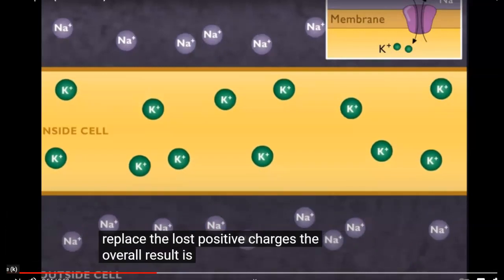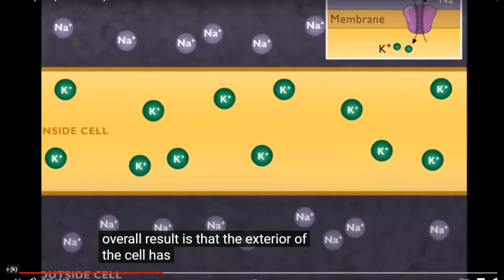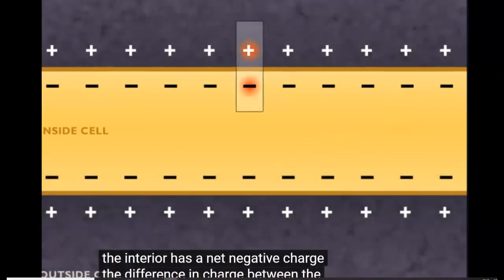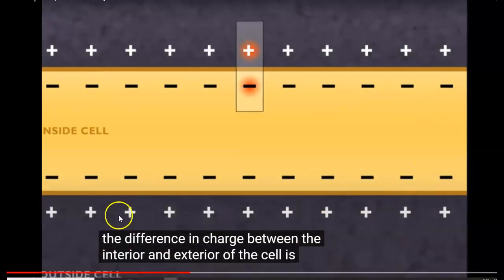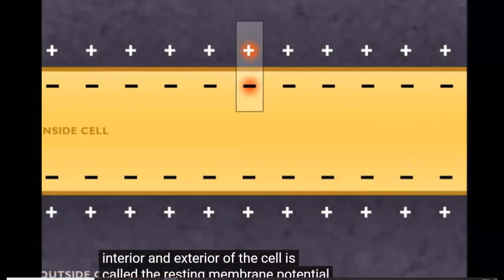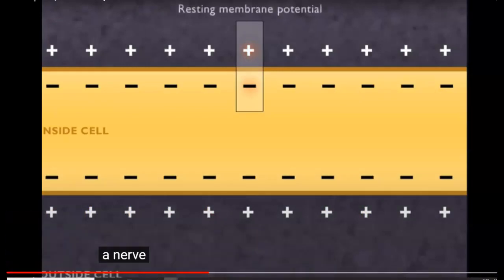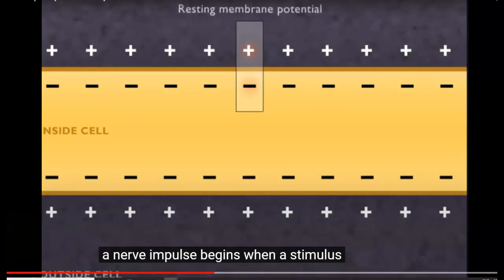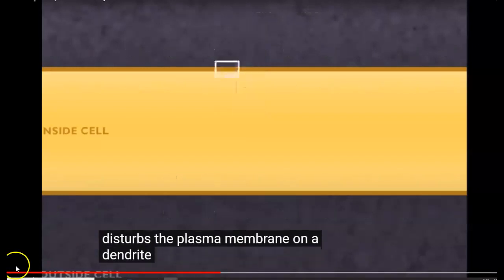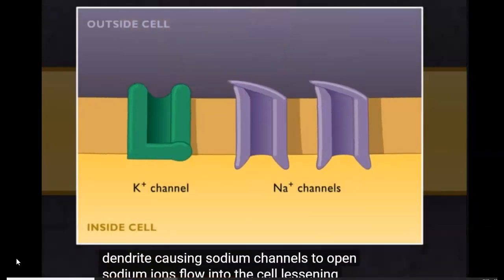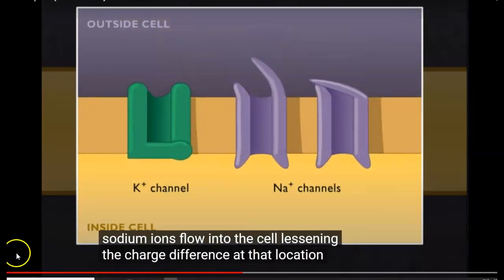The overall result is that the exterior of the cell has a net positive charge and the interior has a net negative charge. The difference in charge between the interior and exterior of the cell is called the resting membrane potential. A nerve impulse begins when a stimulus disturbs the plasma membrane on a dendrite, causing sodium channels to open. Sodium ions flow into the cell, lessening the charge difference at that location.